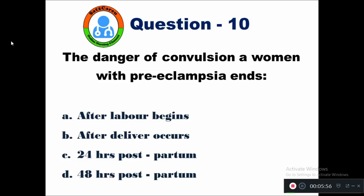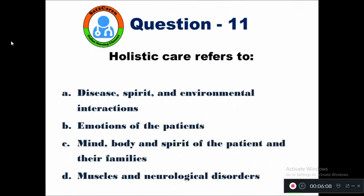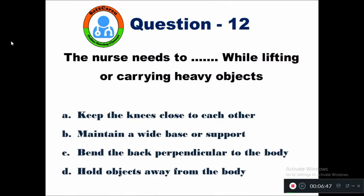The danger of conversion in a woman with preeclampsia ends at 48 hours in the postpartum period. Question 11: Holistic care refers to — option A disease, spirit and environmental interactions, B emotions of the patient, C mind, body and spirit of the patient and their families, D measles and neurological disorders. Holistic care refers to the care given to the mind, body, and spirit of the patient and their families.